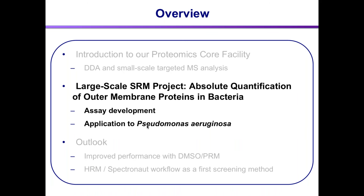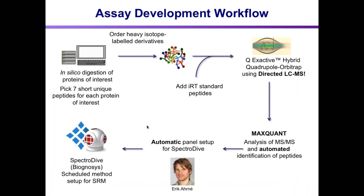With Skyline for larger projects, in our hands it was not so straightforward to get robust peak detection, and we had to manually check most of the data. That took a lot of time for larger sets — when more than 50 proteins or more than 20 samples were involved. Then we heard about Biagnosis and the SpectroDive tool, and we're quite happy with it. With the iRT approach and the calculation of Q-values, this tool provided much better detection of the correct peak, and we applied it to large-scale projects. I want to show an example: the absolute quantification of outer membrane proteins in bacteria.